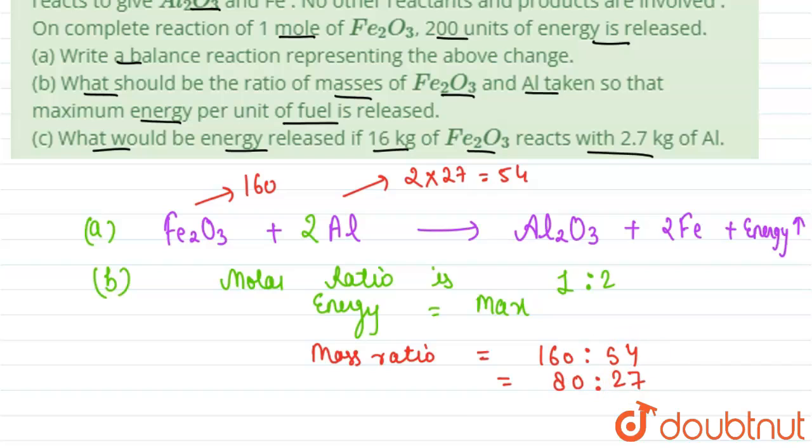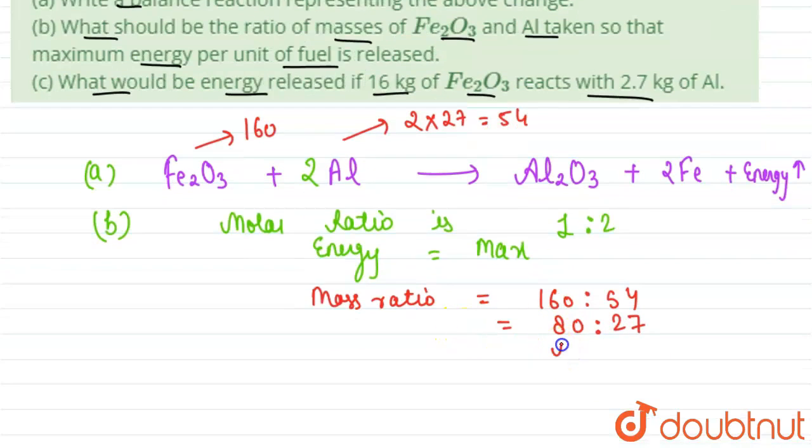80 is to 27 for maximum energy. This is for maximum energy release, the ratio of mass of Fe2O3 to aluminum for maximum energy.